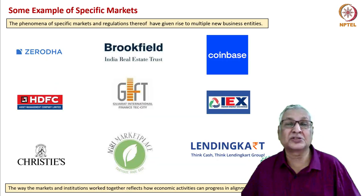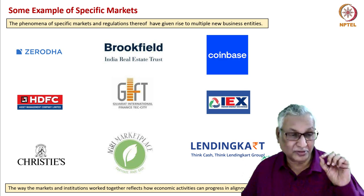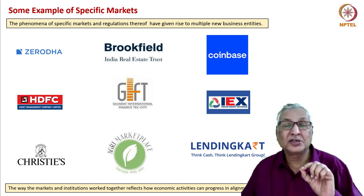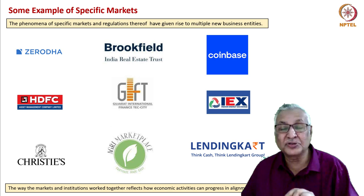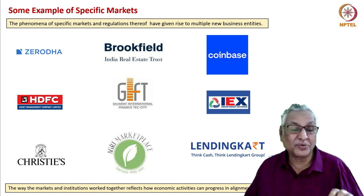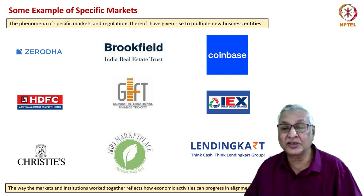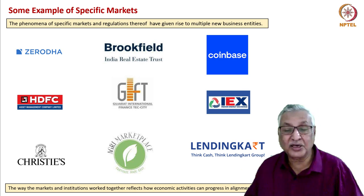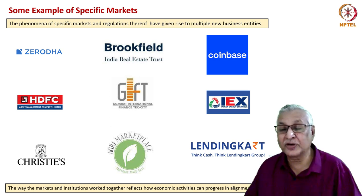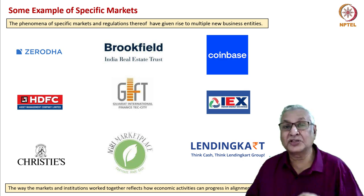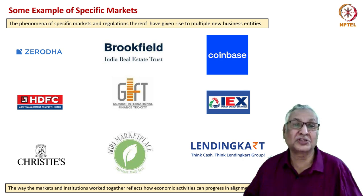Some examples of specific markets: Zerodha is a financial stock market platform; Groupfield is an Indian real estate trust in the housing market area; Coinbase is a crypto market; HDFC Asset Management is a financial market entity; GIFT City is a financial market; IEX is an energy market; Christie's is in auctioning; there are agri marketplaces for social and agricultural marketing; and LendingKart is in the financial market. The way markets and institutions work together reflects how economic activities can progress in alignment and at times in synergy.